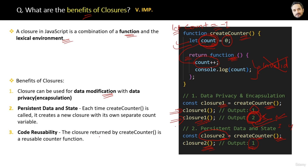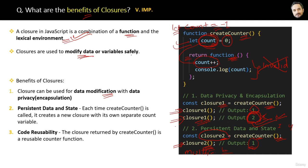The third benefit is code reusability — the closure returned by createCounter is a reusable counter function that can be used in multiple places. In short, remember two things: first, a closure in JavaScript is a combination of a function and the lexical environment; second, closures are used to modify data or variables safely.